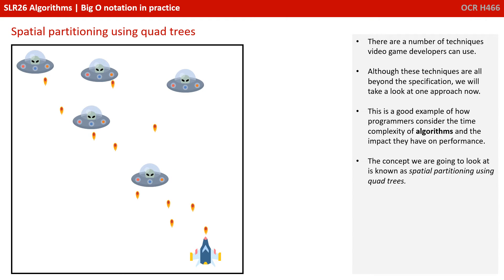Well, there's a number of techniques video games developers can use. And although these techniques are well beyond the specification, we're going to take a look at one approach now. This is a good example of how programmers consider the time complexity of algorithms and the impact they have on performance. The concept we're going to look at is known as spatial partitioning using quad trees.